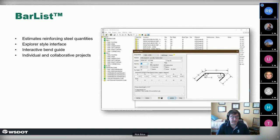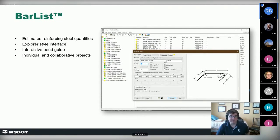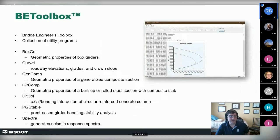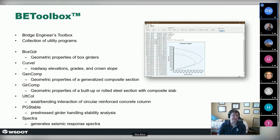We have a utility called Bar List that does reinforcing steel quantities — providing dimensions to generic bar bends and estimating the weight of reinforcing for contract bid documents. There's the Bridge Engineer's Toolbox, a collection of older utility programs converted from Fortran on IBM mainframes developed in the 60s, brought forward into C++. It includes tools for geometric properties of concrete box girders, roadway elevation grades, crown slopes, and similar calculations.